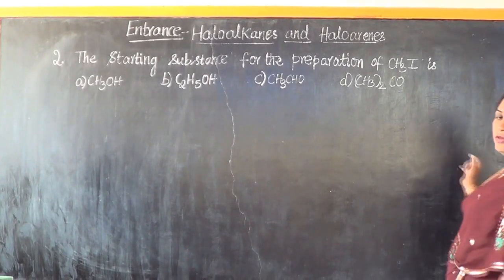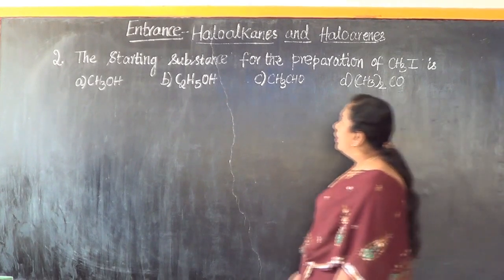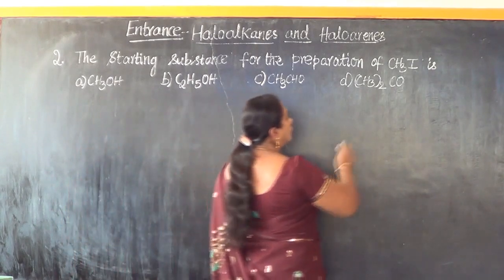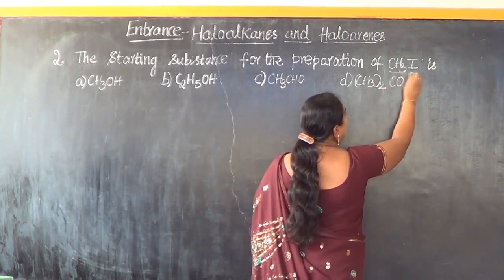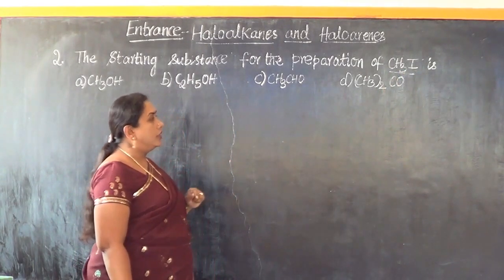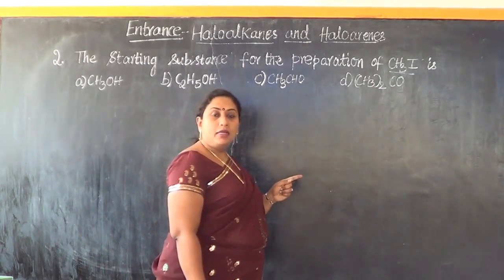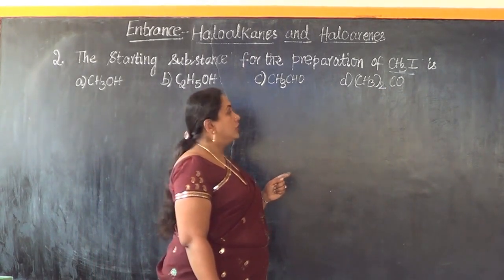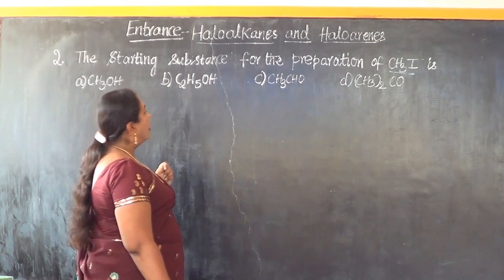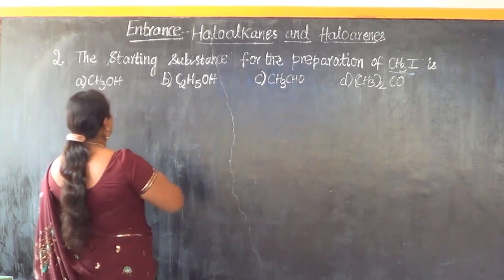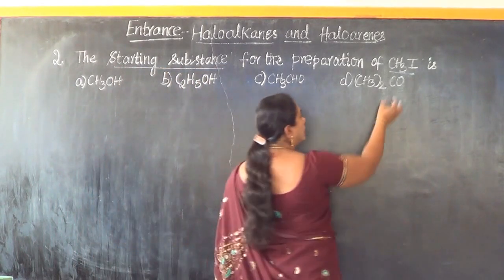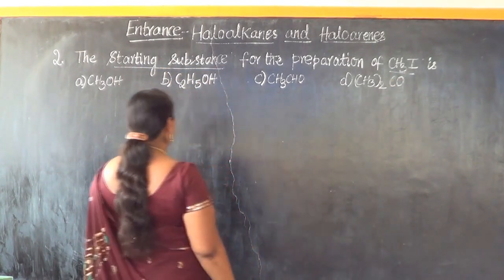Now let us look into question number 2. The starting substance for the preparation of CH3I — what is CH3I? It is iodomethane or methyl iodide. Iodomethane is the IUPAC nomenclature and methyl iodide is its trivial nomenclature. So of the 4 compounds given to us, which would be the compound we can use as a starting material to obtain the product as methyl iodide or iodomethane?